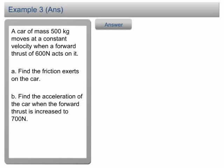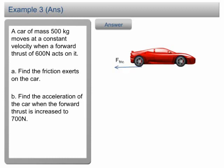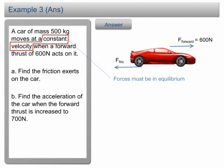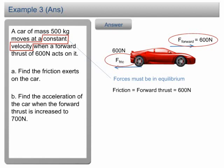Let's solve question A first. We have a car with two forces acting on it: the friction and the forward thrust. The forward thrust is 600N. The car is moving at a constant velocity. According to Newton's first law, if an object moves at a constant velocity, the forces acting on it must be in equilibrium. Therefore, the friction must be equal to the forward thrust, which is 600N.